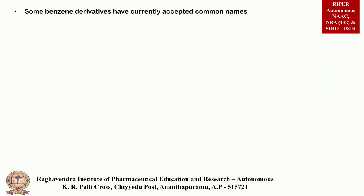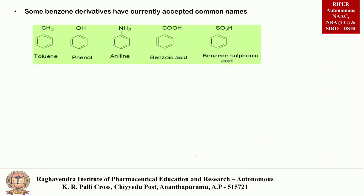Some benzene derivatives have currently accepted common names, so without IUPAC names we can also call them by their common name. For example, methylbenzene has the common name toluene. When an OH group is attached to benzene, it is phenol; when an amino group is attached, it is aniline. When a carboxylic acid group is attached, the common name is benzoic acid. When a sulfonyl moiety is attached, it is benzene sulfonic acid.